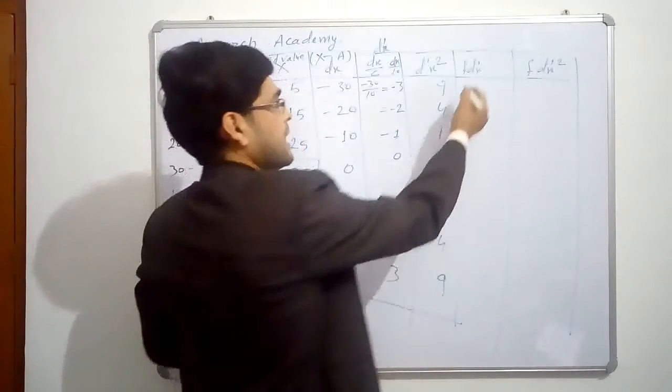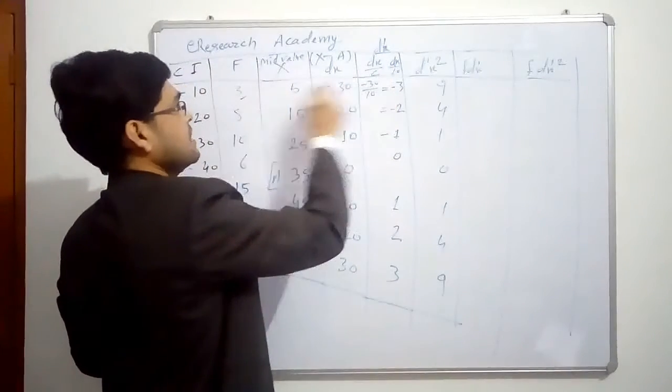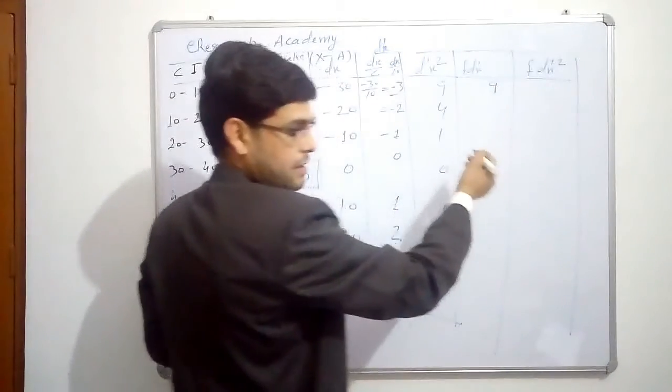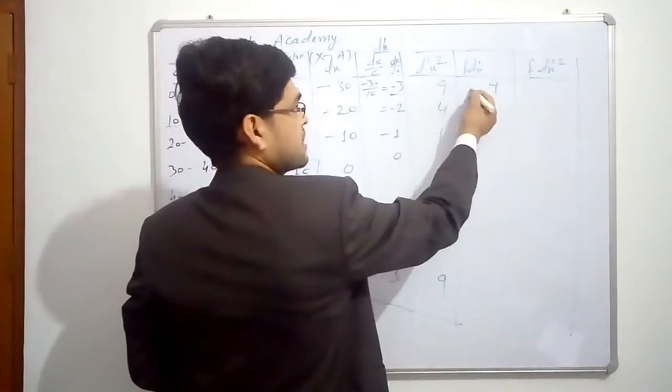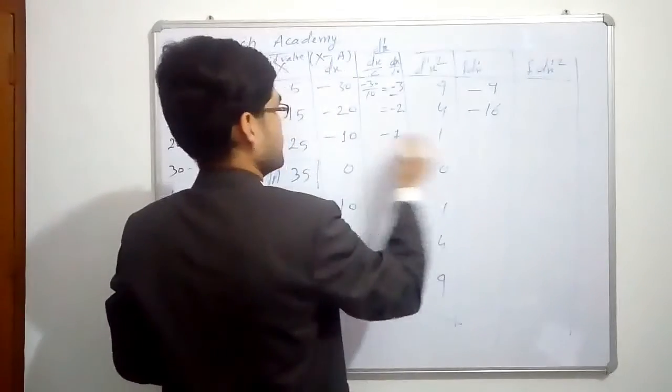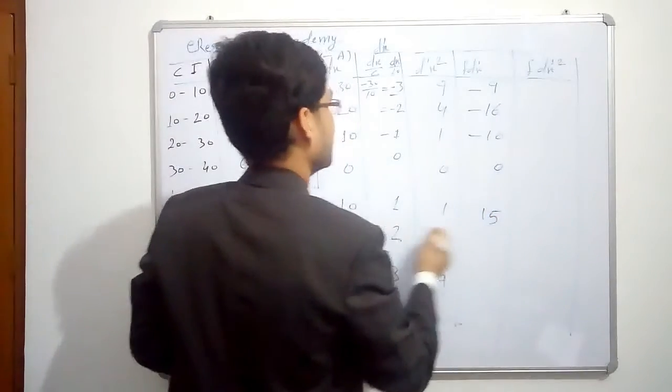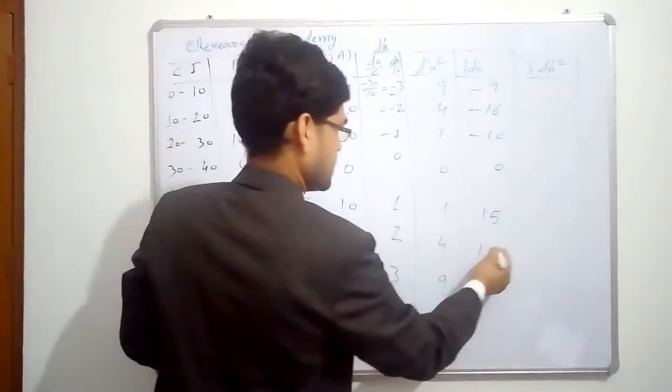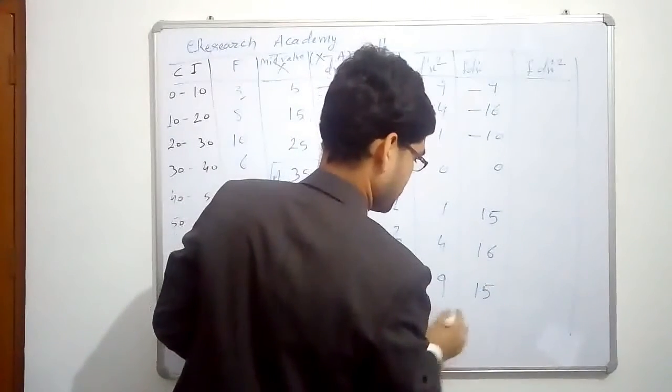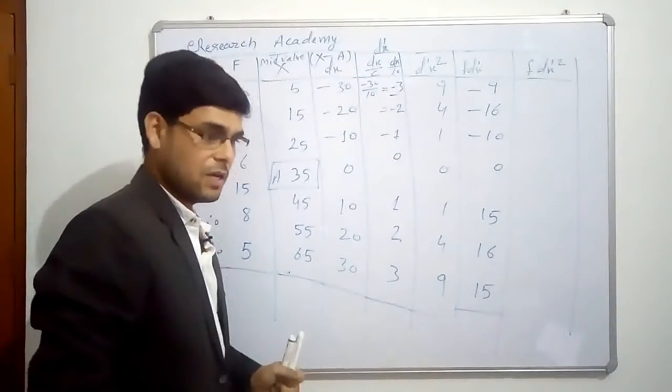Then f multiplied by d-x dash. So f is 3, d-x dash is minus 3. 3 into minus 3, this is minus 9. Then 8 into minus 2, this is minus 16. 10 into minus 1, minus 10. Then 0. 15 into 1, 15. And 8 into 2, 16. And 5 into 3, 15. These are our values of f d-x dash.